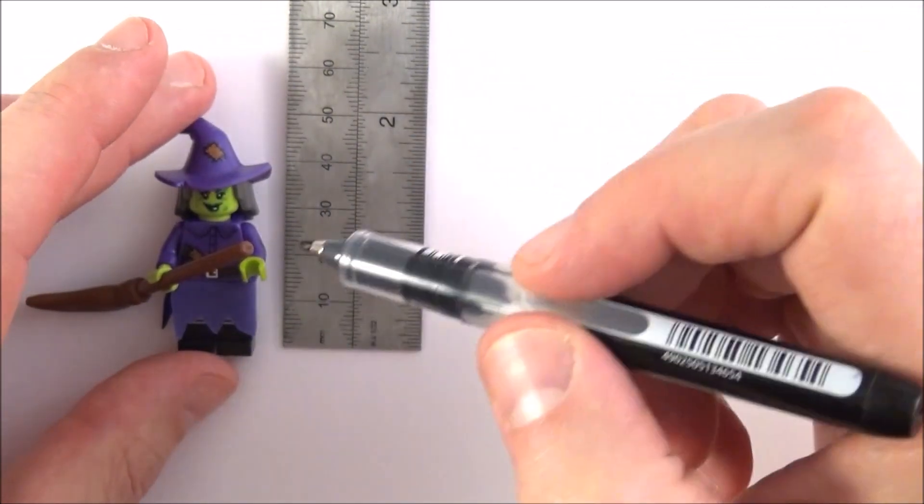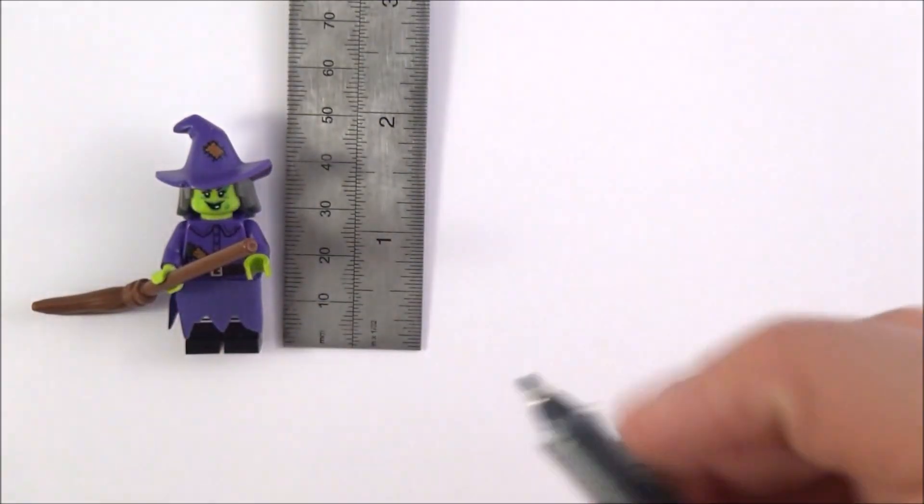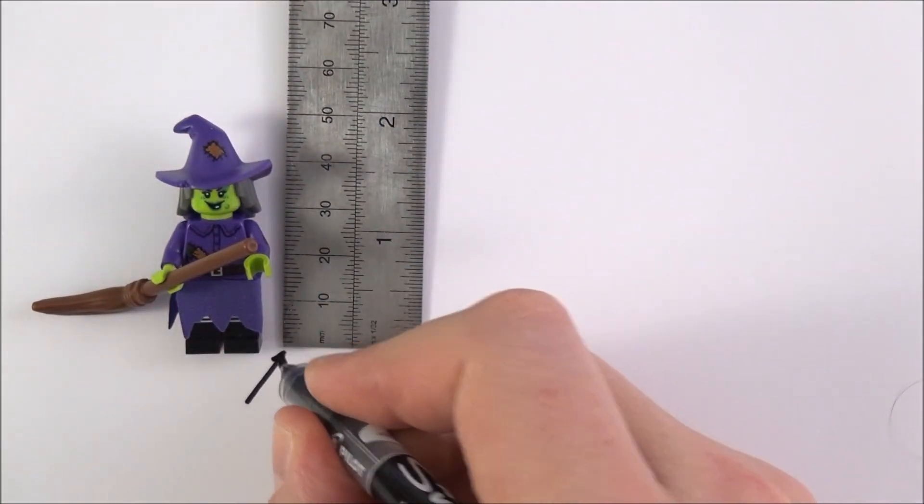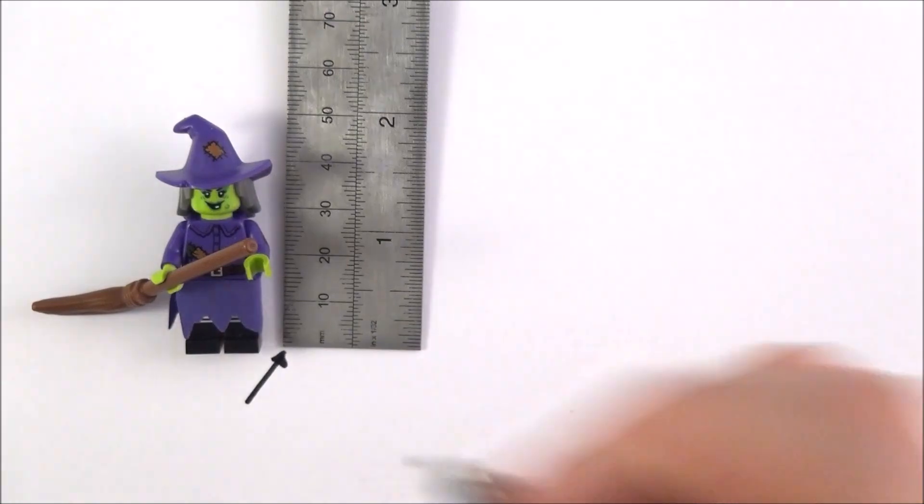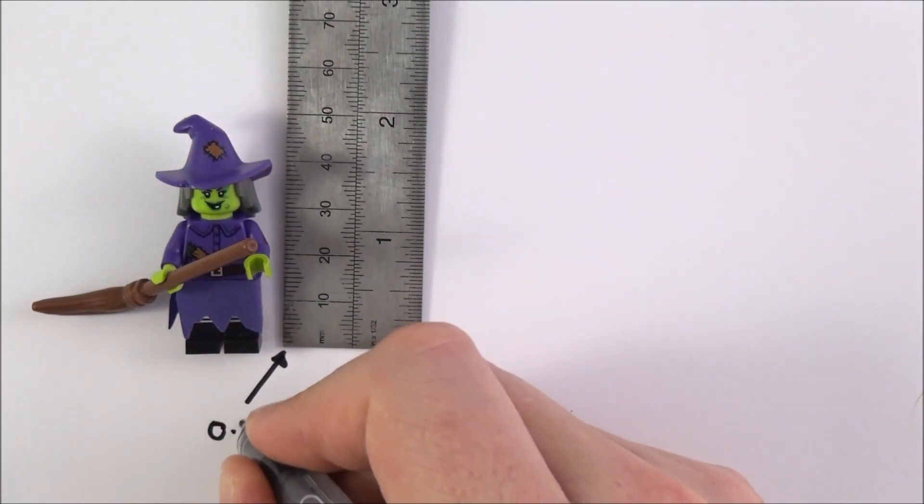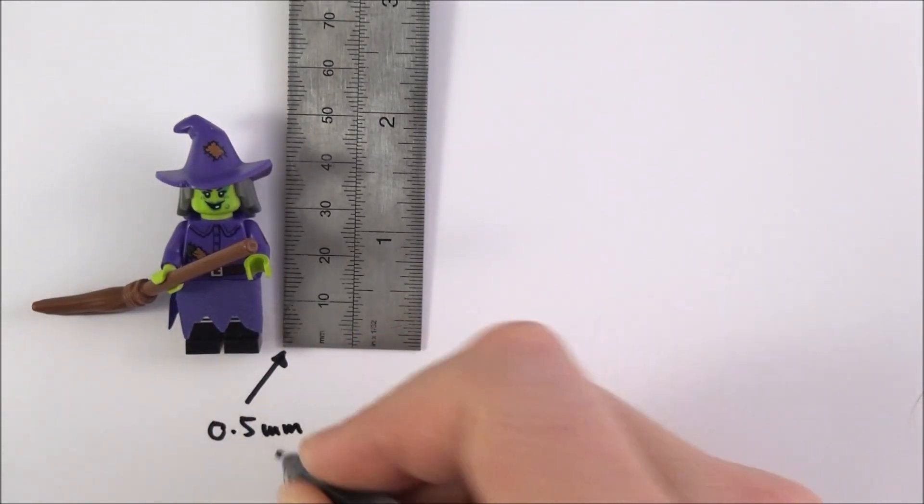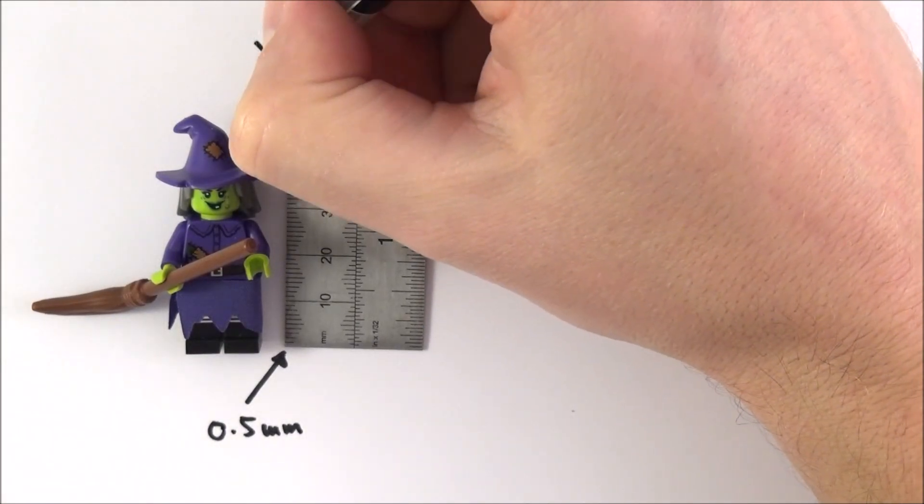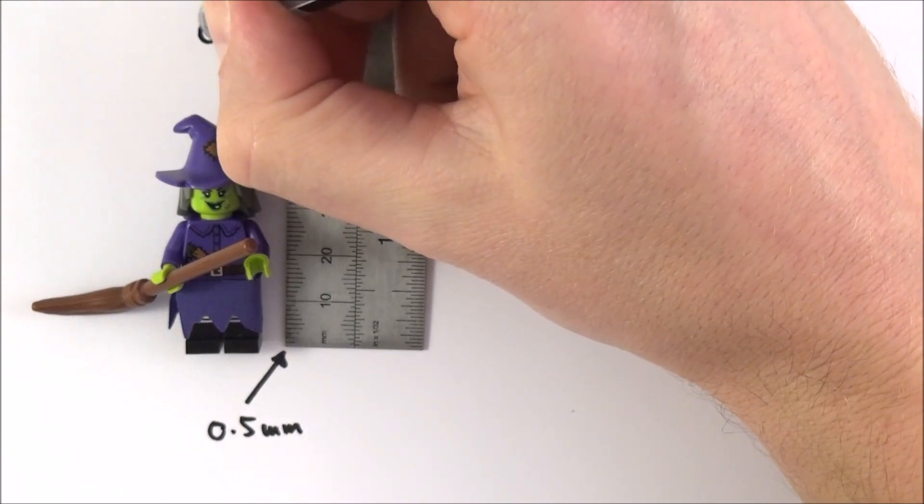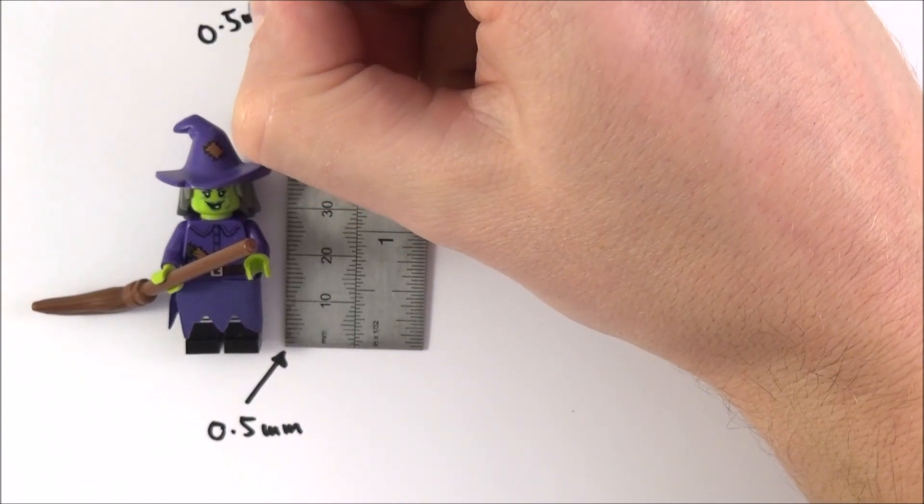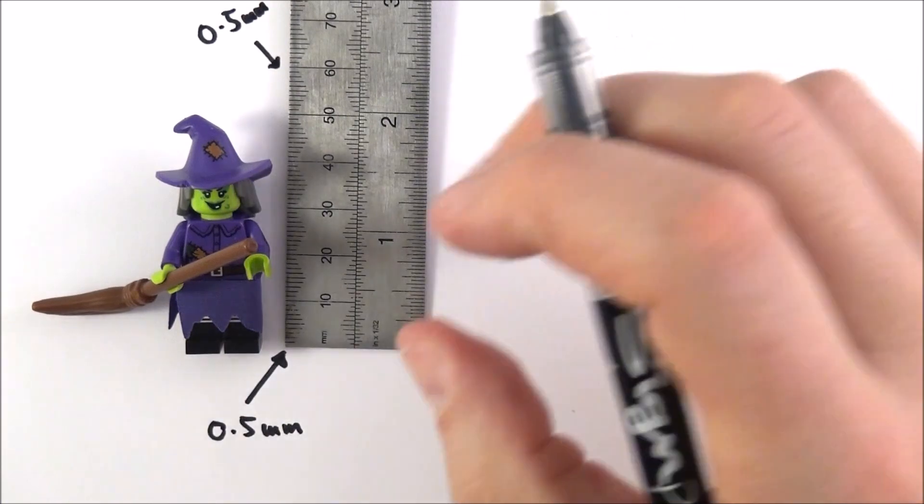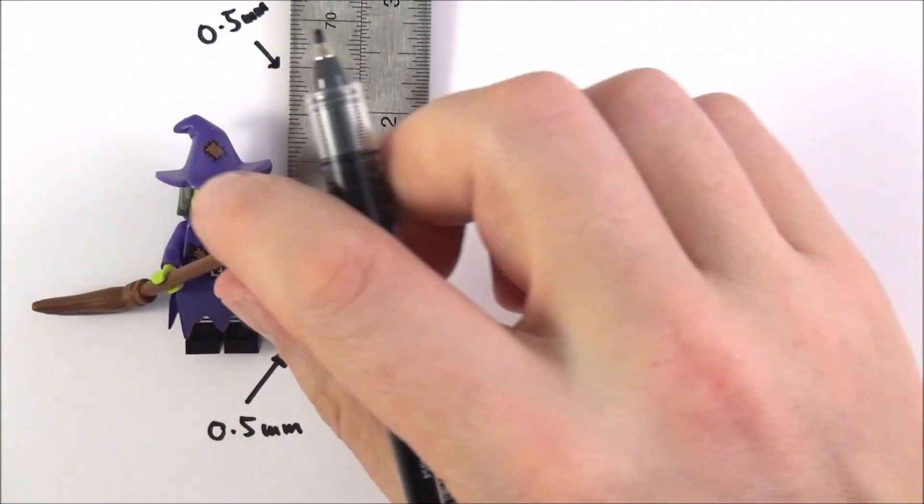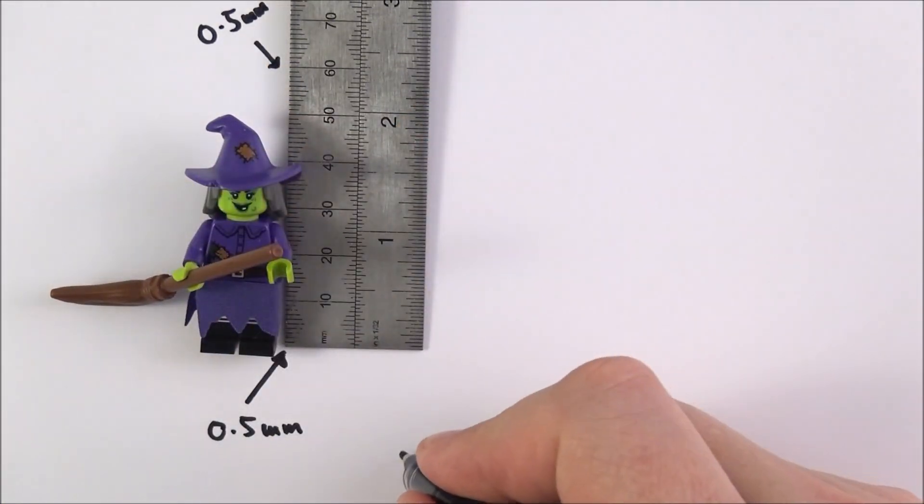Effectively there are two sources of error. What we have is an uncertainty at the start of the measuring and this is going to be an uncertainty of 0.5 of a millimeter. There's also going to be an uncertainty at the top, and therefore at the top there's also going to be an uncertainty of 0.5 of a millimeter. What that means is our total uncertainty in the measurement of the height of this witch is going to be equal to plus or minus one millimeter.